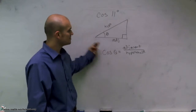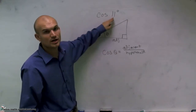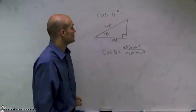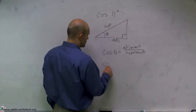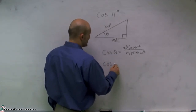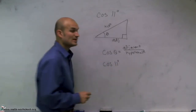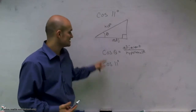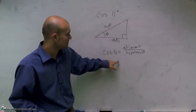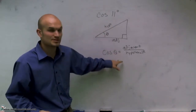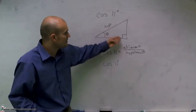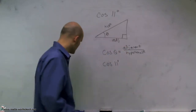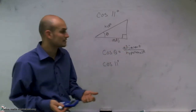Now, here's the important thing. What we're given is we are actually given already the angle 11 degrees. So cosine of theta — we actually know what theta is. Theta is our angle. So cosine of 11 is going to equal a ratio of adjacent over hypotenuse. To figure that number out, we're going to have to plug into our calculator.